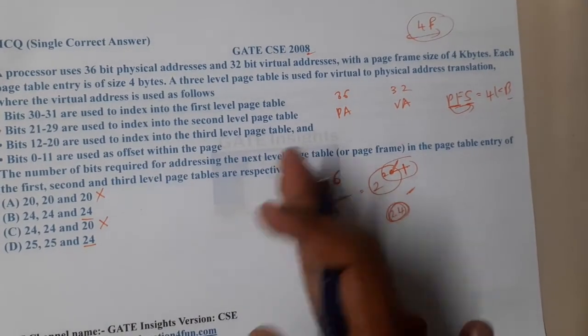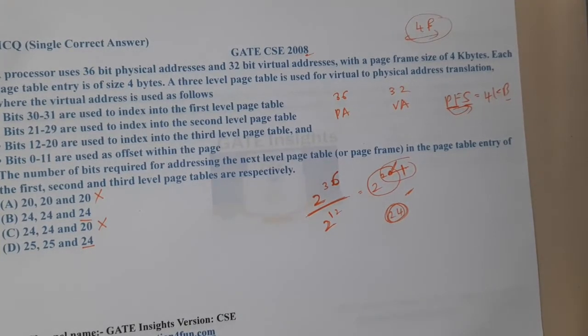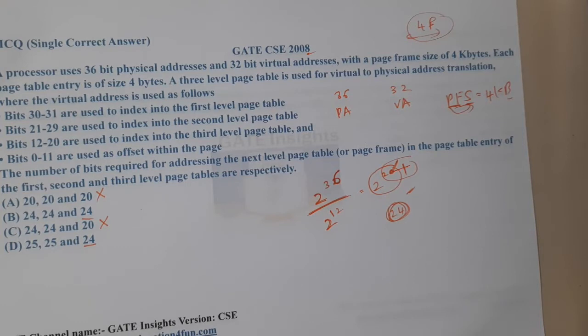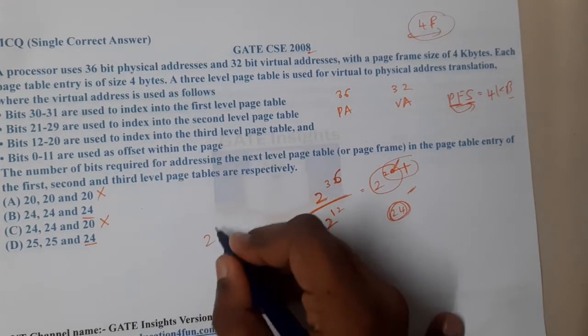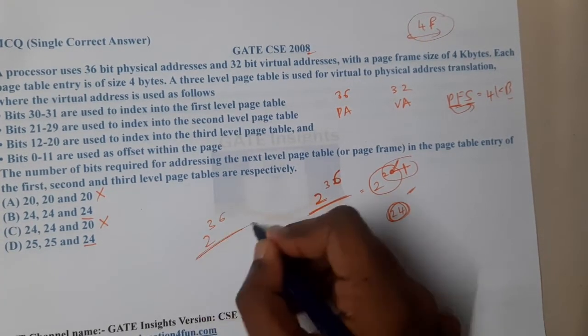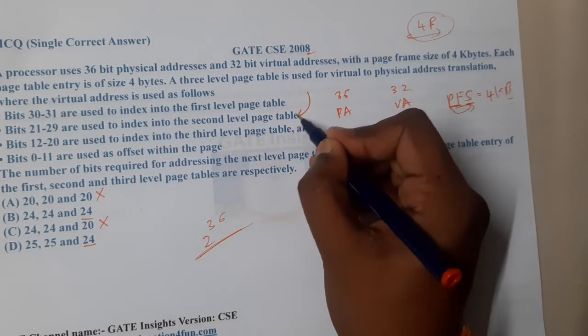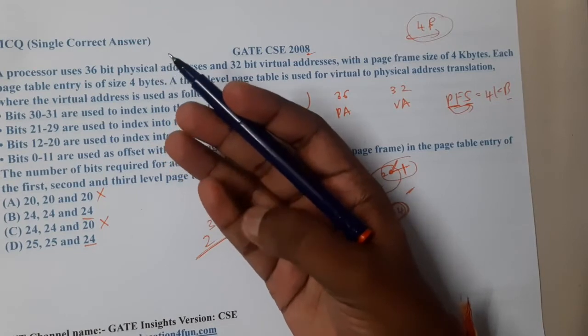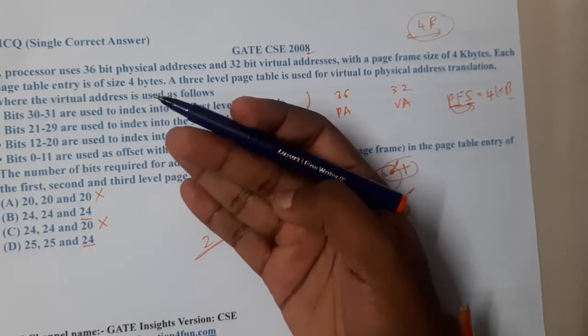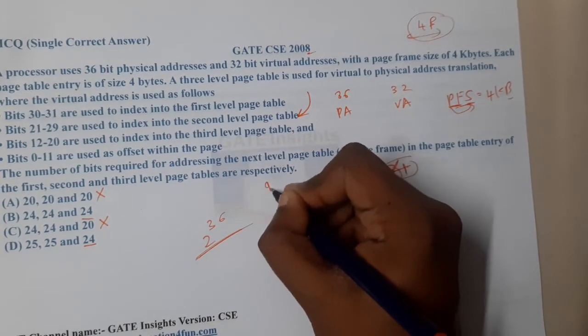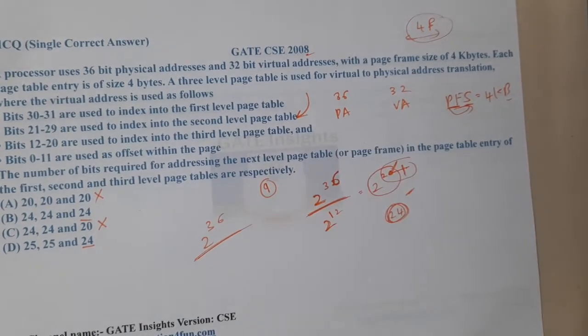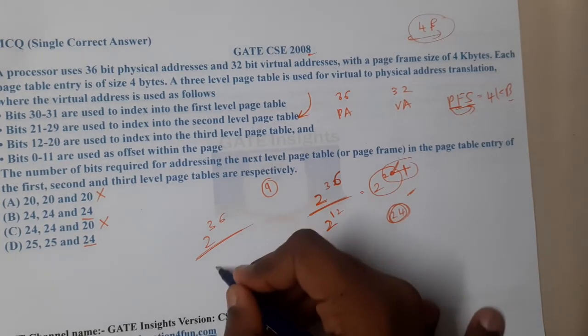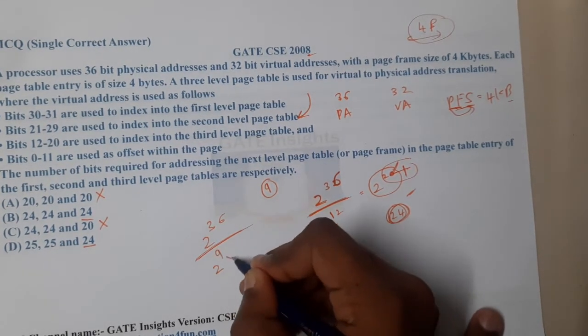Now let us try to calculate the middle one. So here we are having 2 power 36, and in that question they clearly give that how many bits are occupied by this second guy. He is occupying from 21 to 29 - that's 21, 22, 23, 24, 25, 26, 27, 28, 29 - so a total of 9 bits are occupied, so it is indirectly 2 power 9.